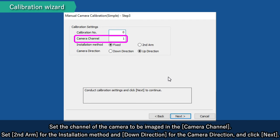Set the channel of the camera to be imaged in the camera channel. Set Second Arm for the installation method. And down direction for the camera direction. And click Next.